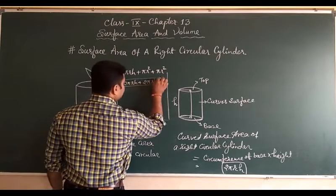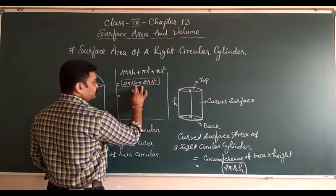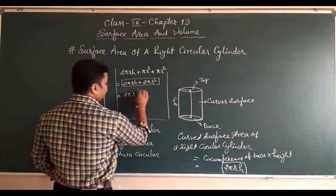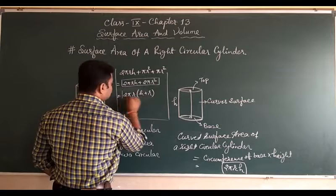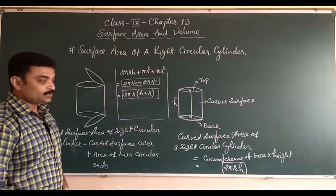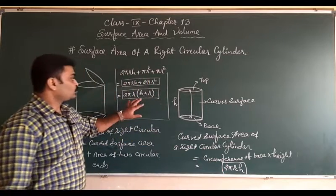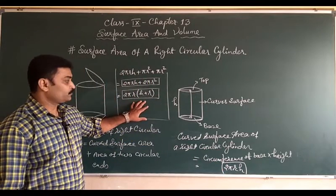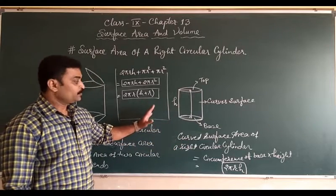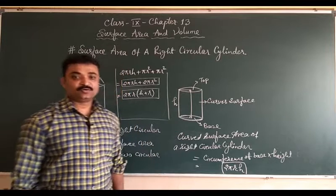Sometimes we will use this formula. Otherwise, after taking 2πr common, what we get is 2πr(h + r). This is also the total surface area of a cylinder. So we have discussed the curved surface area of a cylinder and the total surface area of a cylinder. On the basis of these two formulas, we will do Exercise 13.2. Pause the video to note it down.